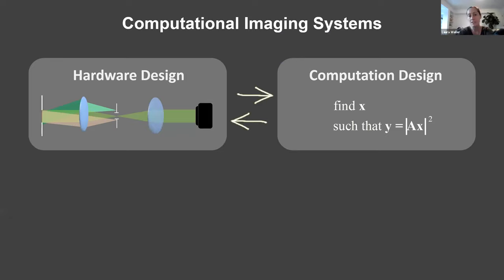Computational imaging is a design concept for designing imaging systems. You have your hardware toolbox — optics and the physics of how light propagates — which is the domain of optical engineering. And then we also have a computation toolbox where we capture images and do fairly complex algorithms to reconstruct different quantities. Hardware and software should be co-designed in a computational imaging system, meaning you use the best of both in creative ways. You need people who know both the physics and the computation.